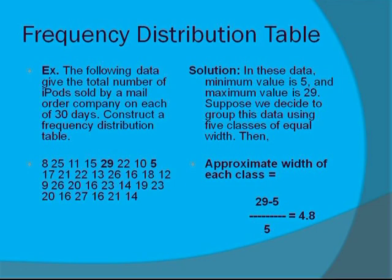The solution: In these data, minimum value is 5 and the maximum value is 29. Suppose we decide to group this data using five classes of equal width. Then you have approximate width of each class: 29 minus 5 divided by 5 equals 4.8.